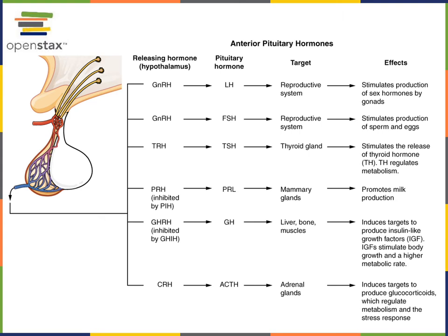In the hypothalamic-pituitary-adrenal axis, or HPA axis, the hypothalamus responds to stress by releasing CRH, the corticotropin-releasing hormone, into the hypophysial portal circuit — the blood flowing into the anterior pituitary. CRH then binds to receptors on the surface of cells in the anterior pituitary and stimulates the release of ACTH. ACTH then travels in the blood to the adrenal cortex and binds to receptors on cells there, stimulating the production of glucocorticoids, the primary one being cortisol.